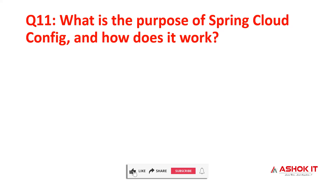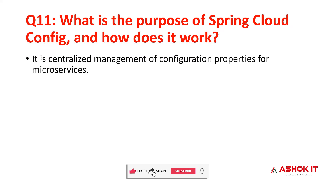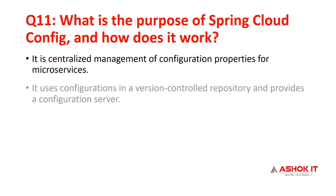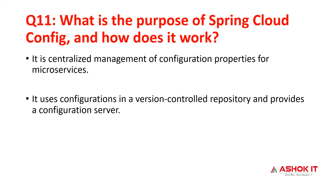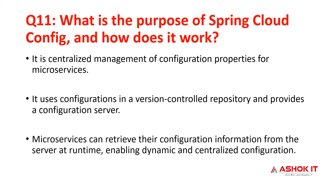Question 11: what is the purpose of Spring Cloud Config and how does it work? This is for centralizing configuration properties for microservices. If you have a common property across multiple services, you can use Spring Cloud Config. It supports version controlling for configuration and allows properties to be retrieved and managed at runtime — providing dynamic and centralized configuration.